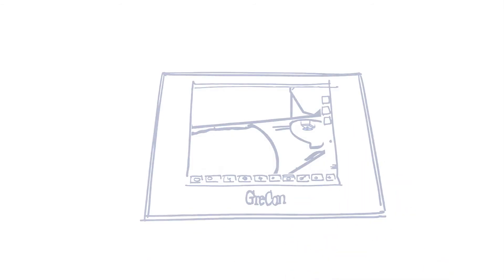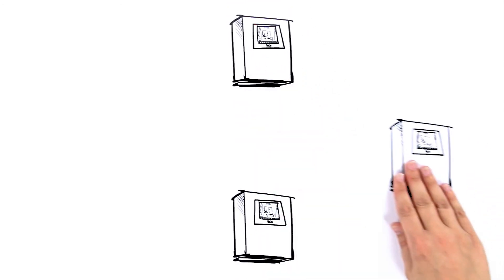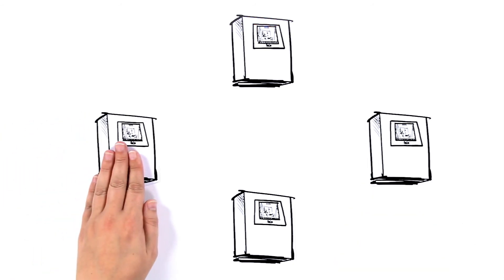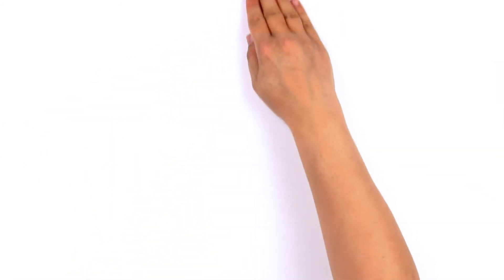Thanks to the innovative network technology GRECON NET, several control consoles can be arranged, decentralized and distributed in your production. This makes it possible for operation right in the heart of the action, and so saves the cost of installing cables.